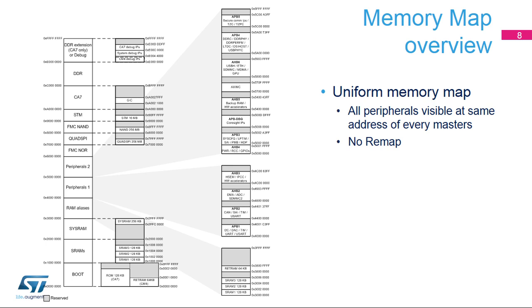There is no dynamic memory remapping. Only part of the MCU SRAM and RETRAM memories are aliased on two locations to allow Cortex-M4 access optimizations.